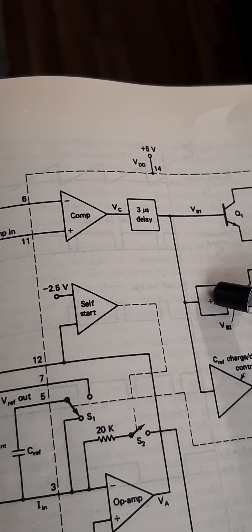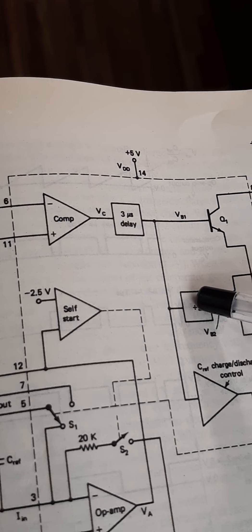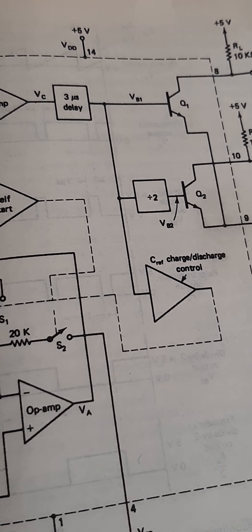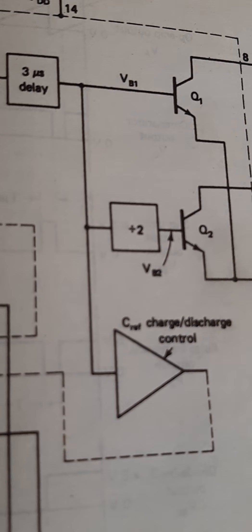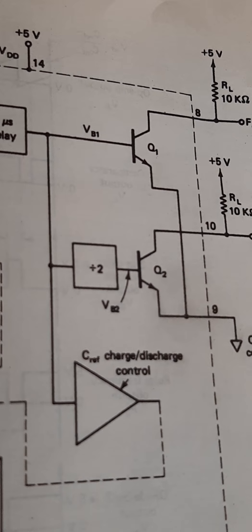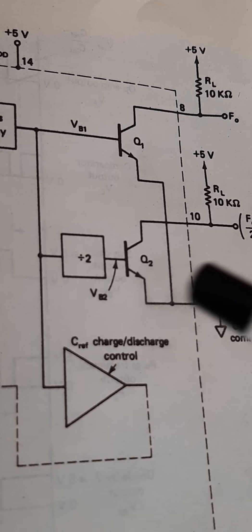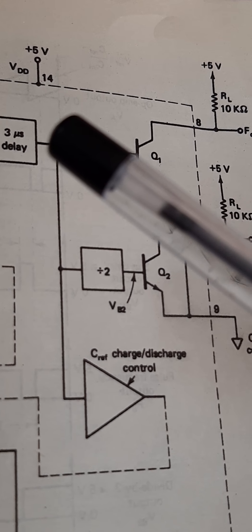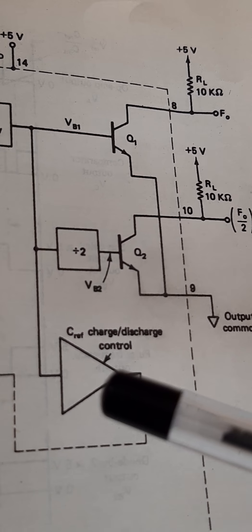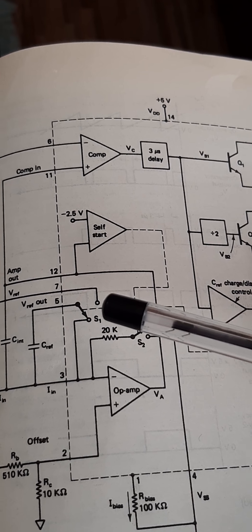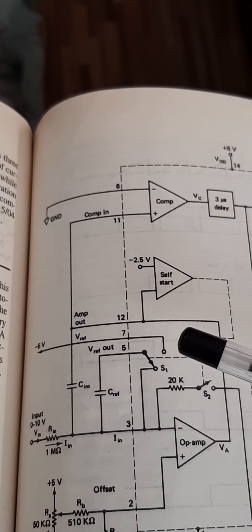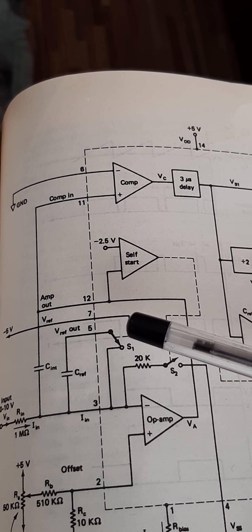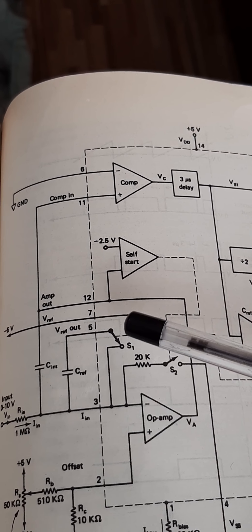This divide-by-2 circuit acts as a negative edge trigger — a negative edge triggered flip-flop that is activated during the negative trigger. The output is also connected to a C-reference charge and discharge circuit, which is connected to a switch that will be moved either to one position or to minus 5 volts.